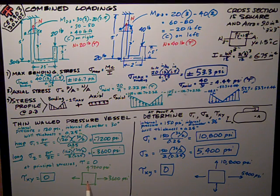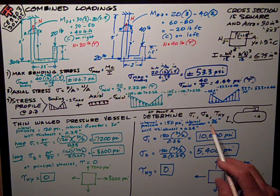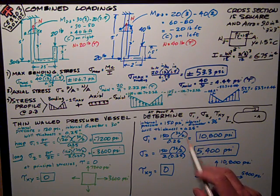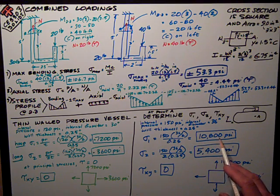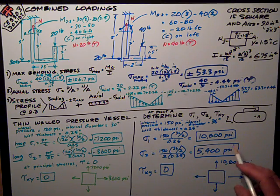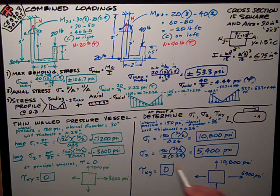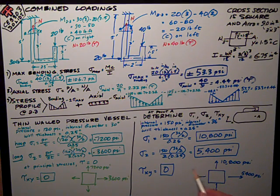For the blue test: 150 PSI internal pressure, 36-inch diameter, 0.25-inch wall thickness. Plugging in the numbers, I get 10,800 PSI for the hoop stress, which is sigma 1, the maximum principal stress. Sigma 2 is half of that: 5,400 PSI. The shear stress is zero. I plotted it on a stress element.